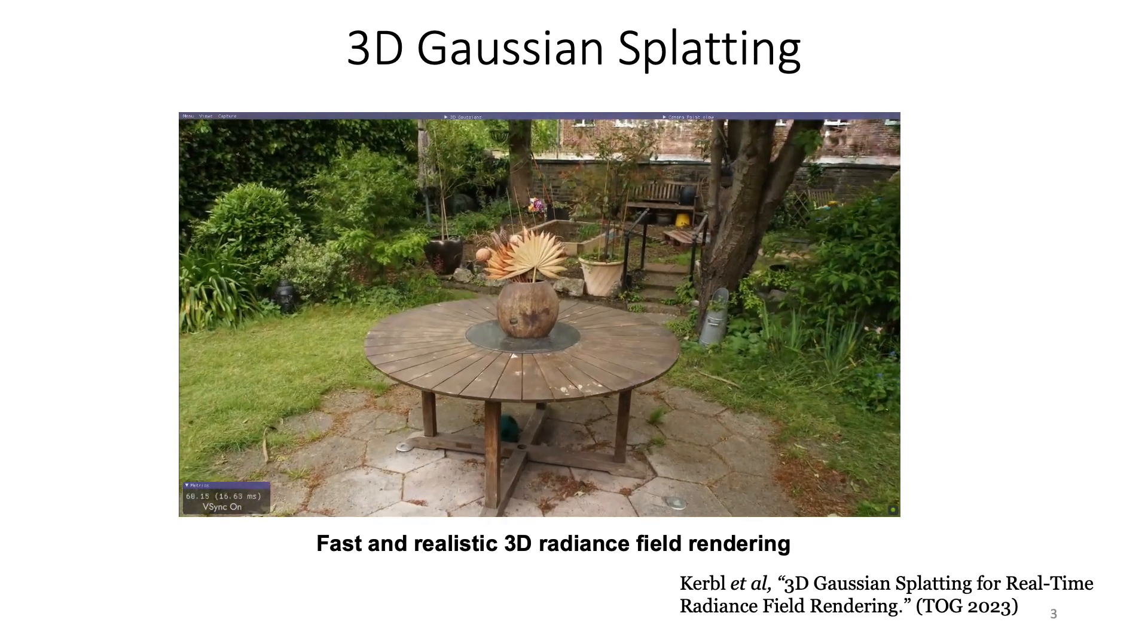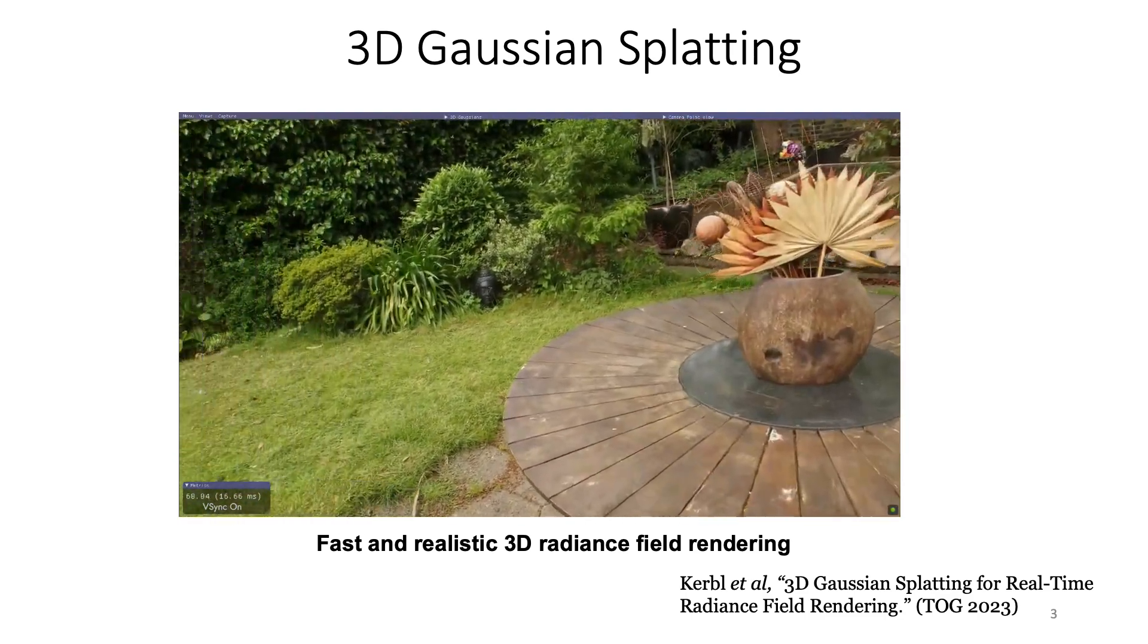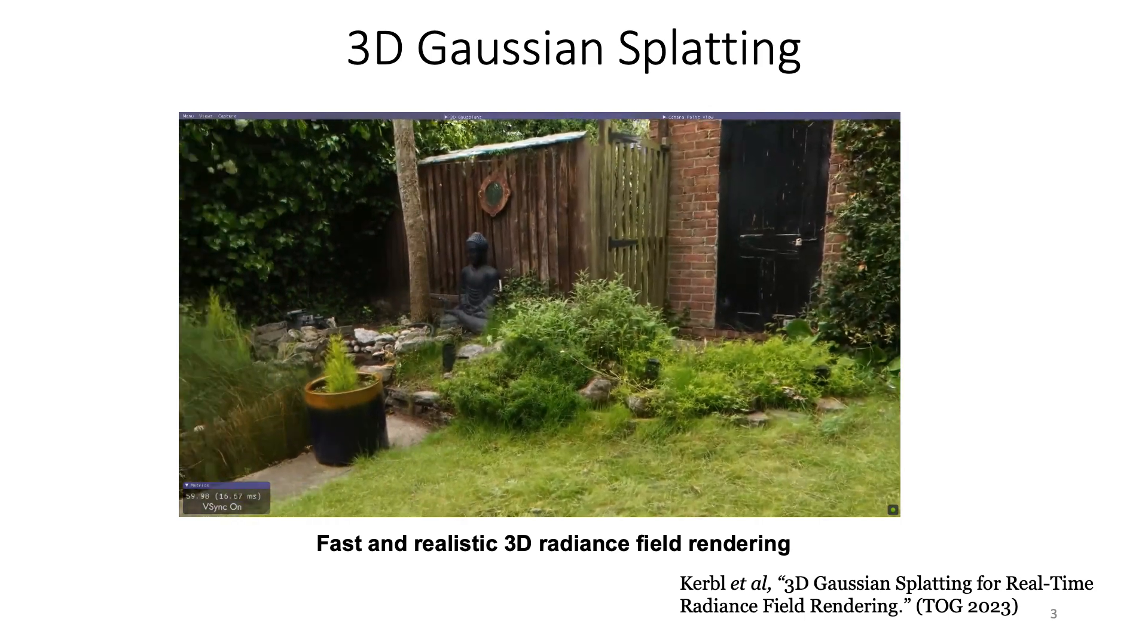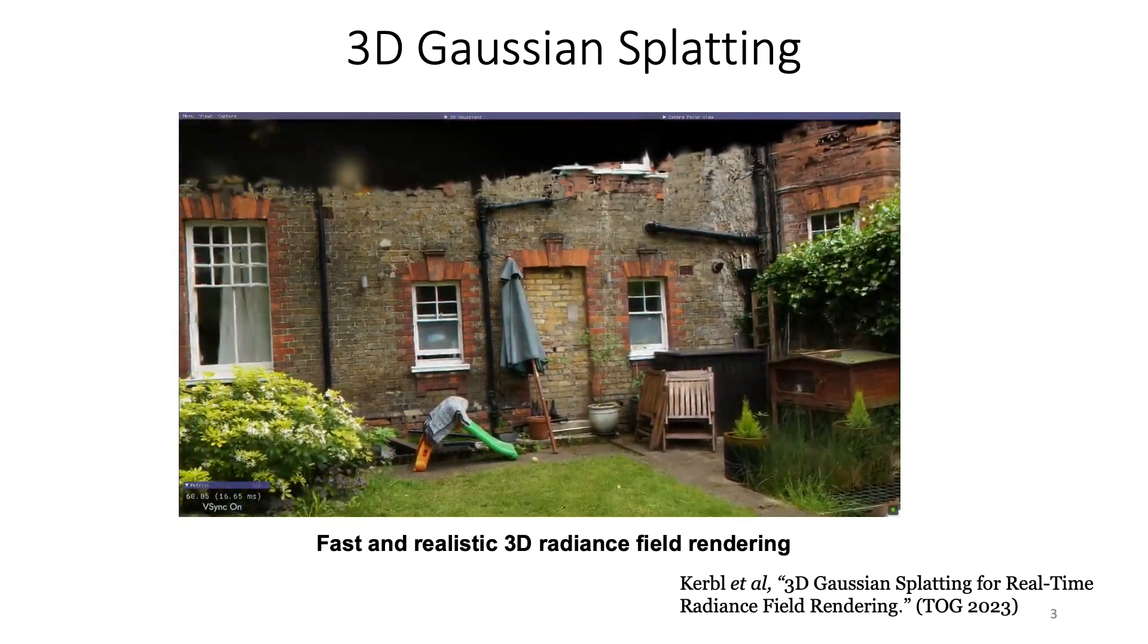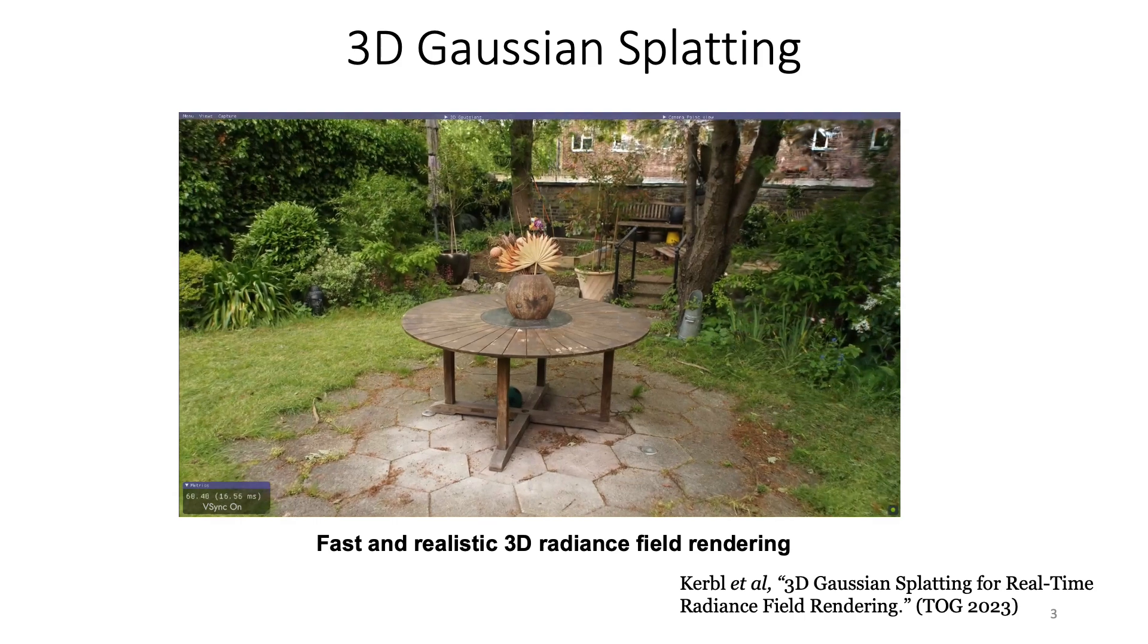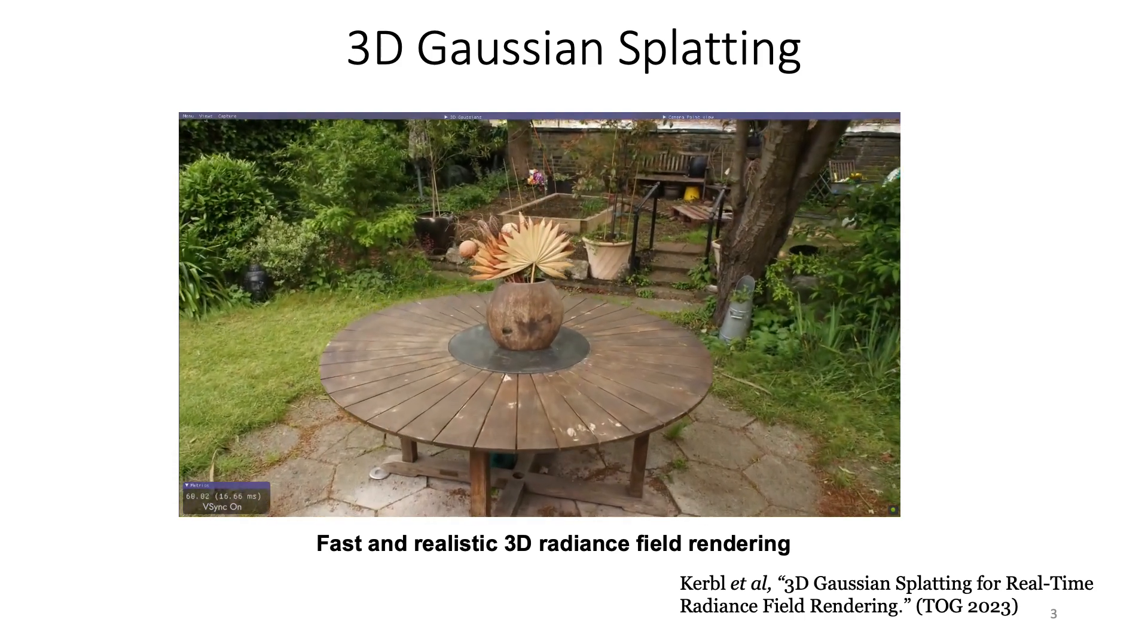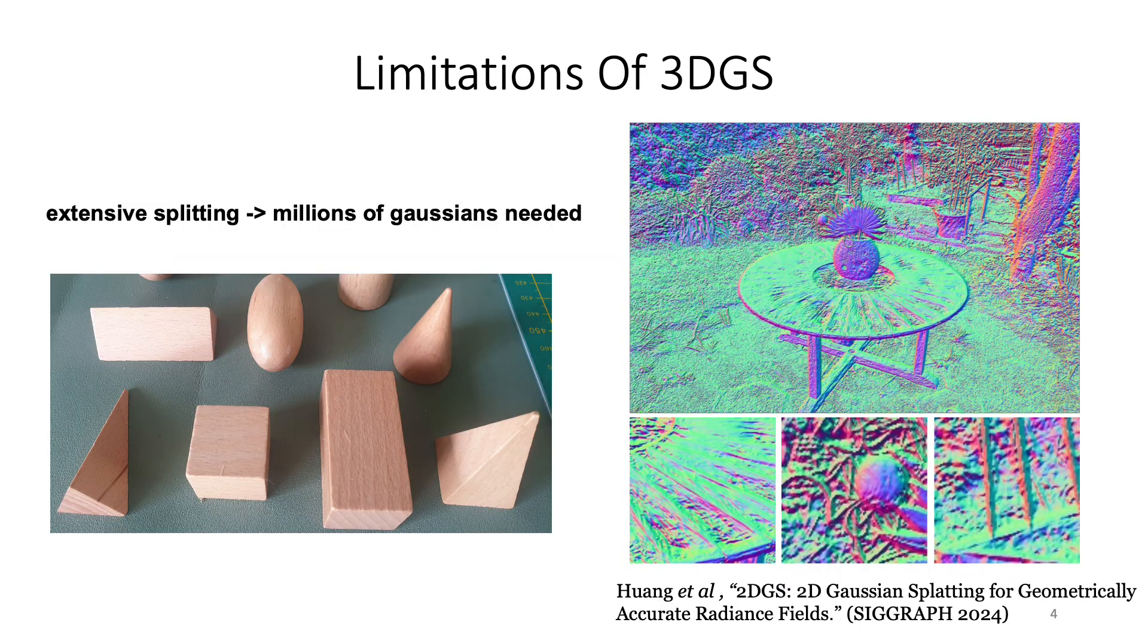3D Gaussian Splatting has emerged as state-of-the-art in terms of fast and realistic 3D radiance field rendering and has been used extensively for so many 3D applications over the past two years. Some of the limitations of Gaussians is that they don't have boundaries, they're continuous.